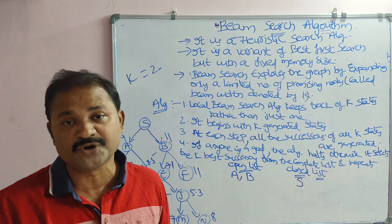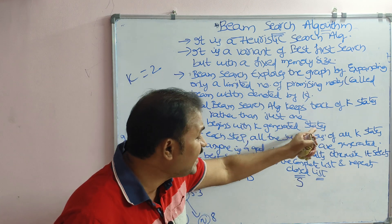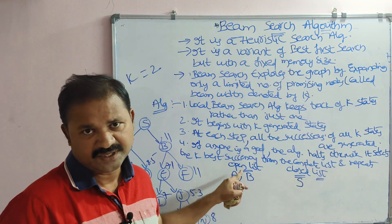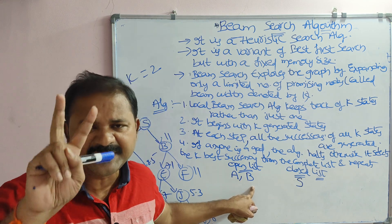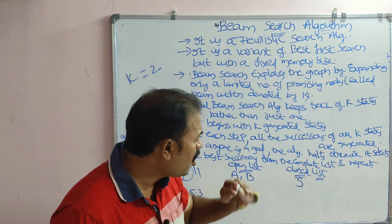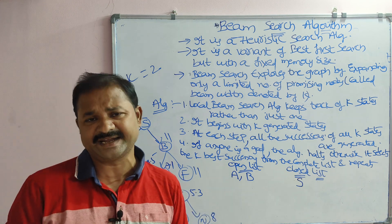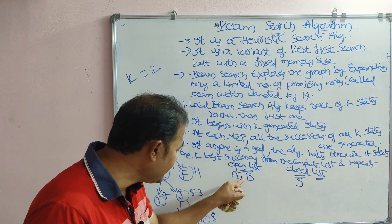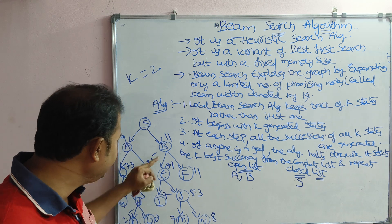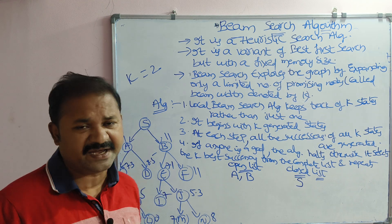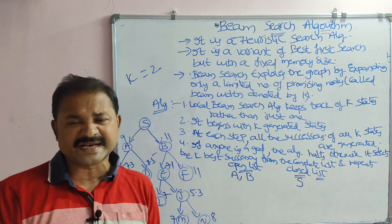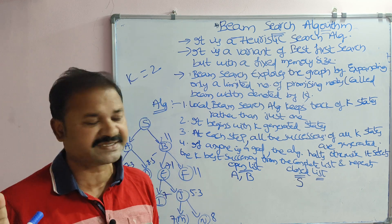The algorithm begins with k generated states — here k equals 2, so the open list contains two states. At each step, all the successors of those k states are generated. The nodes in the open list are A and B, so we generate the successors of both: A's successors are C and D, and B's successors are E and F.